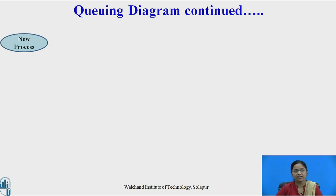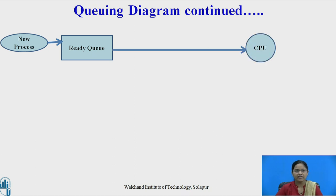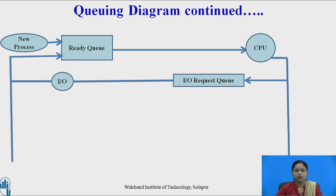Whenever a new process enters the system, it is added into the ready queue. The scheduler then selects the process for execution and gives it to the CPU. During execution, the process may wait for an input-output event, at which point it moves from the ready state to the waiting state and waits in the IO request queue — which is a device queue. Once IO completes, the process can again enter the ready queue.